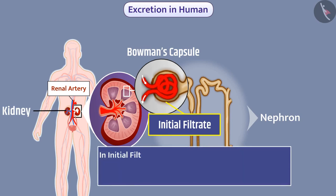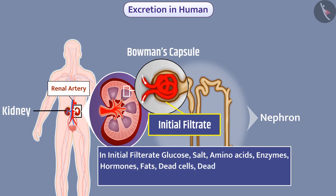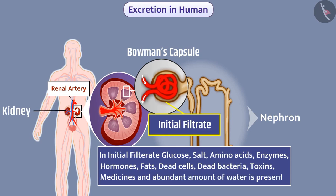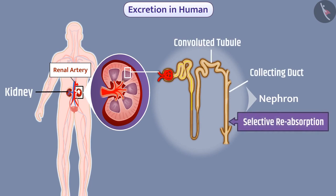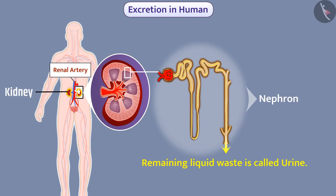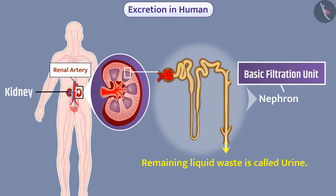The initial filtrate contains glucose, salts, amino acids, enzymes, hormones, fats, dead cells, dead bacteria, toxins, medicines, and an abundant amount of water. When the initial filtrate flows through the tubular portion of the nephron, there is selective reabsorption of these materials. The level of absorption depends on the need of water in the body. The remaining liquid waste is called urine. Since the filtration work in the kidney is performed by the nephron, it is called the basic filtration unit.